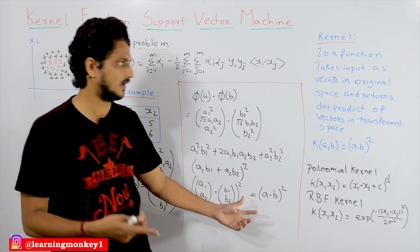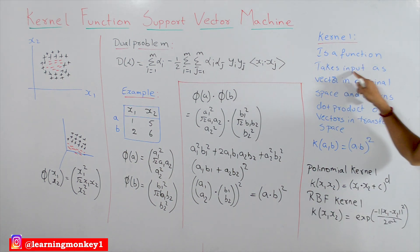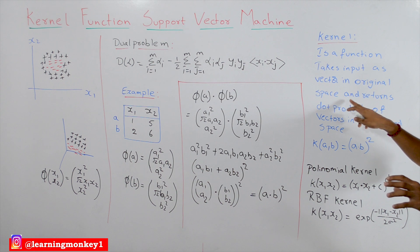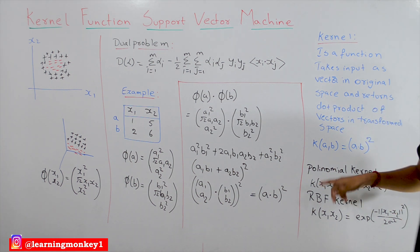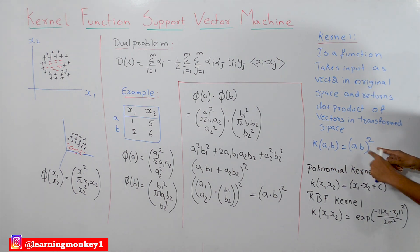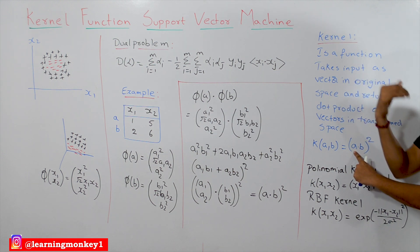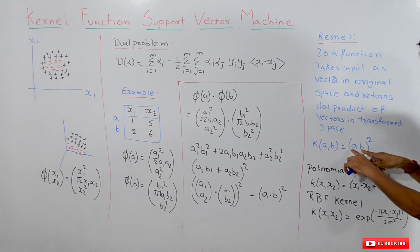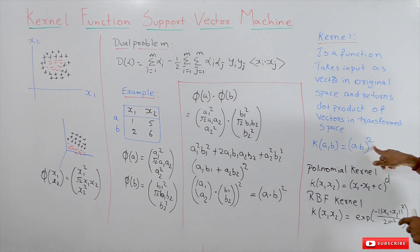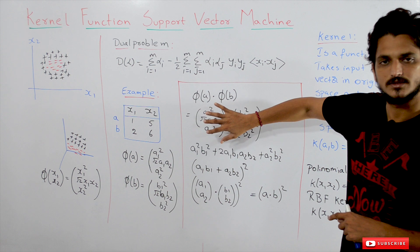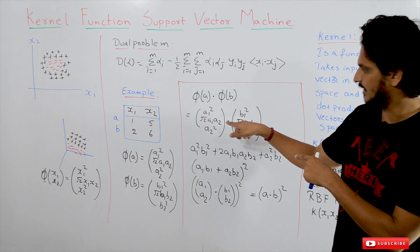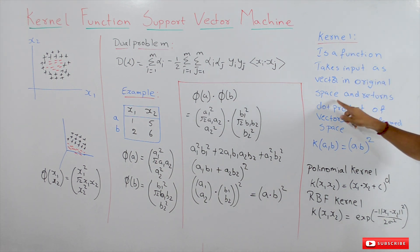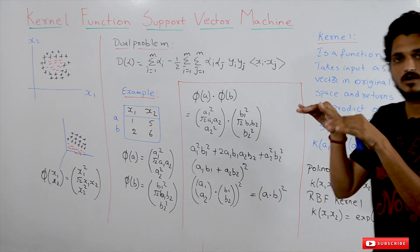Now let's check the definition of kernel function to understand why it should be in this format and what its use is. The definition of kernel function: it is a function that takes input as vectors in the original space and returns the dot product of vectors in the transformed space. So our function k(a, b) = (a dot b) whole squared — where a and b are inputs from actual data — is a kernel function. When we apply this, we are doing the dot product of original data and squaring it, which gives the dot product value of the transformed space.